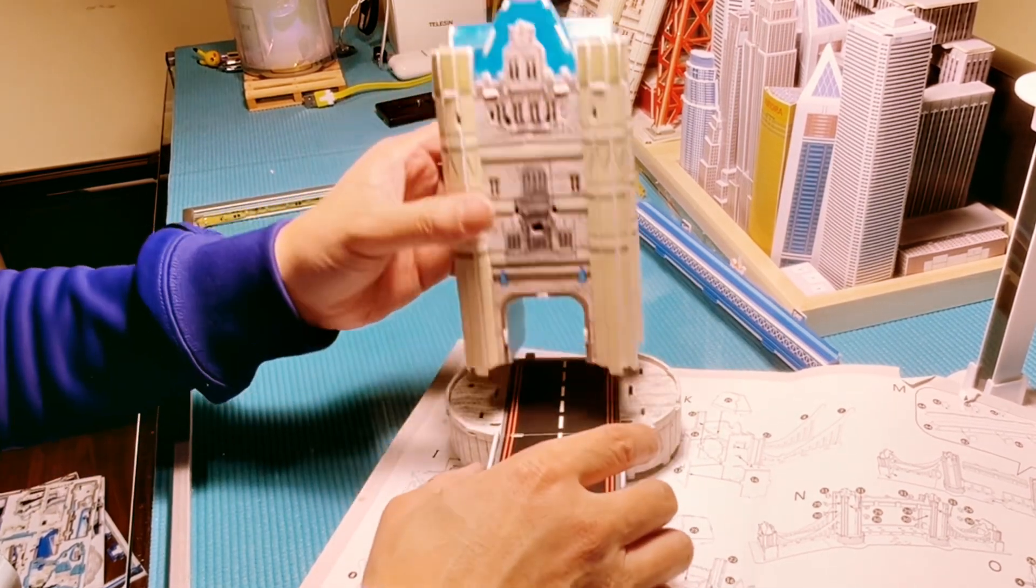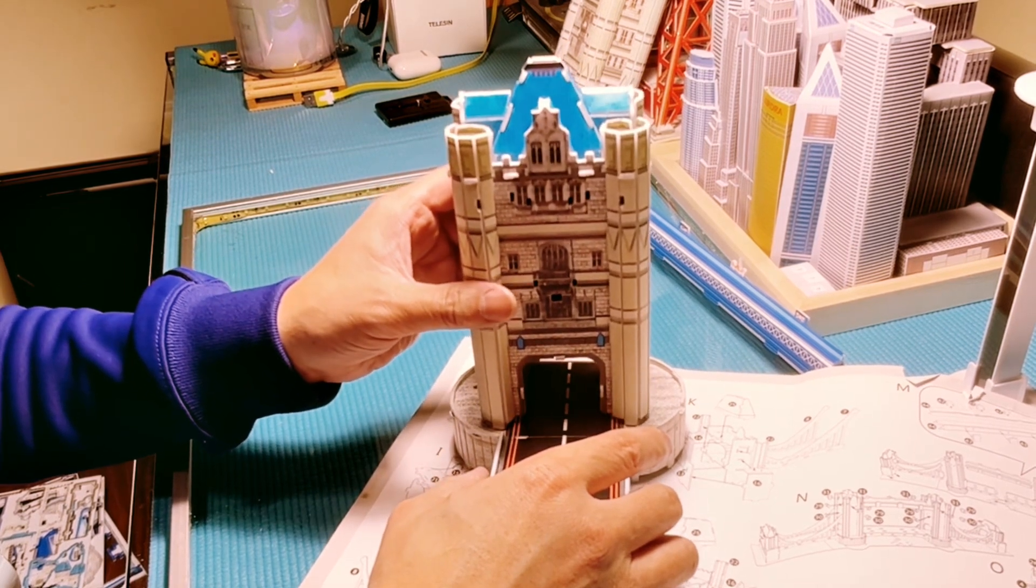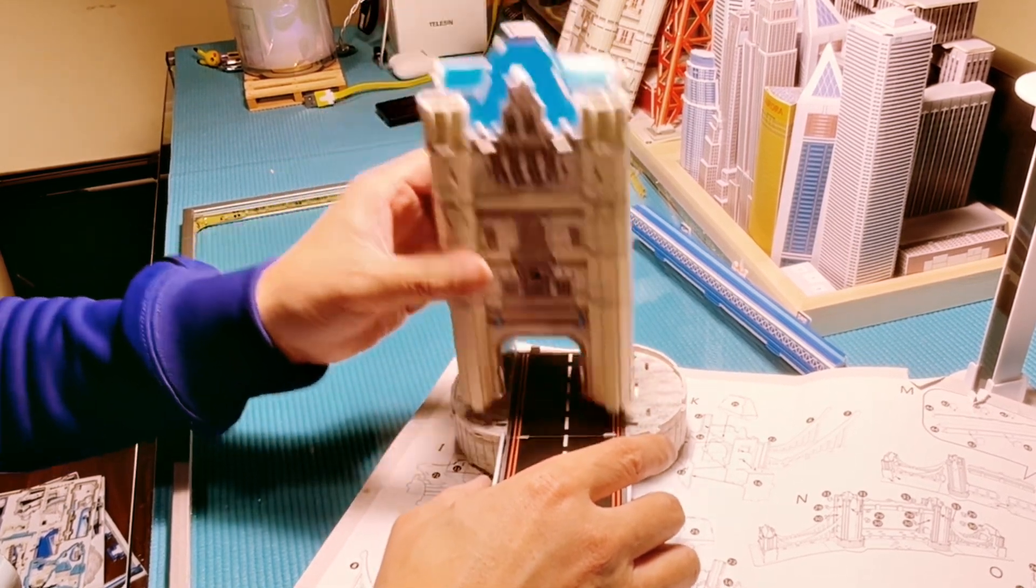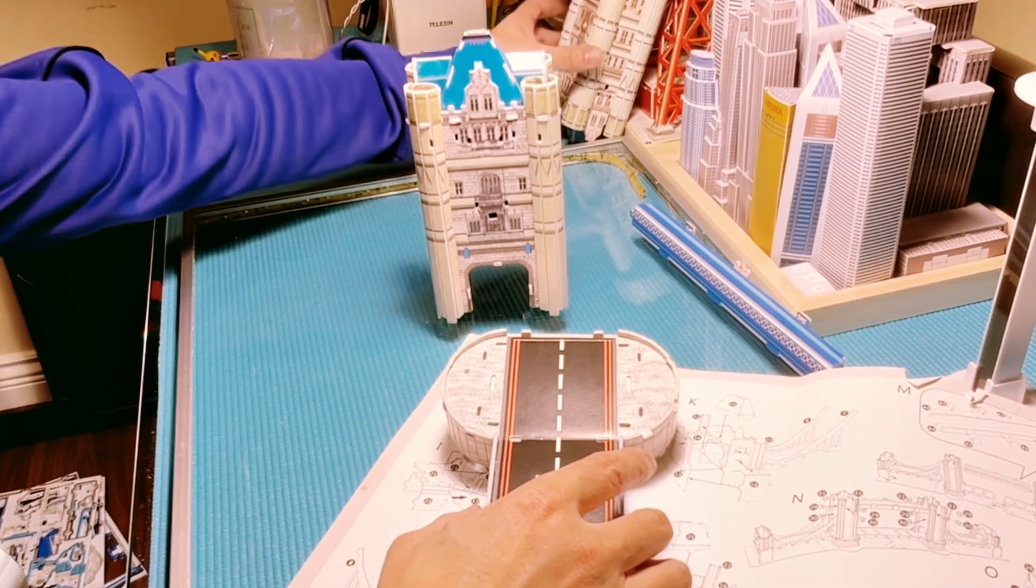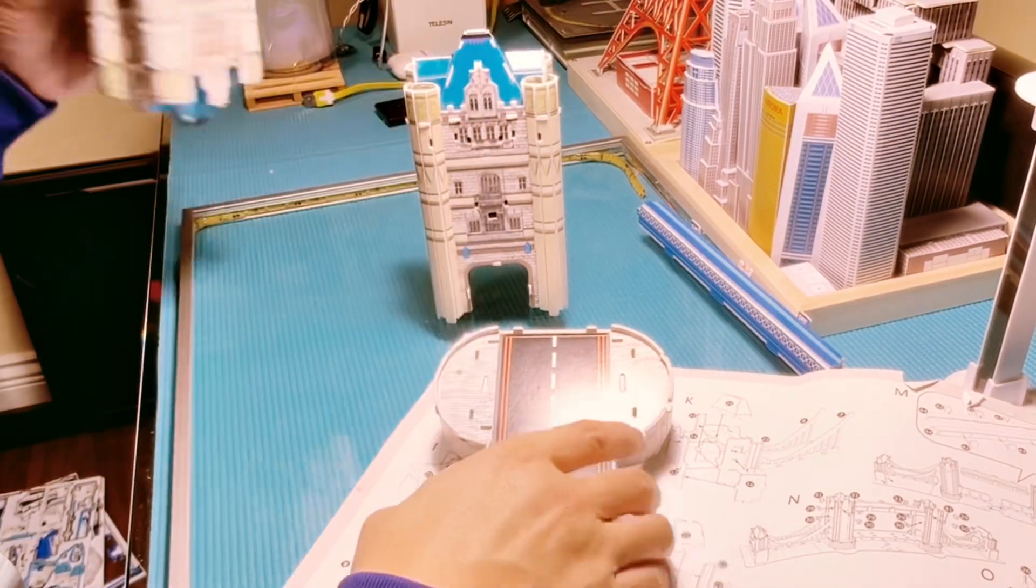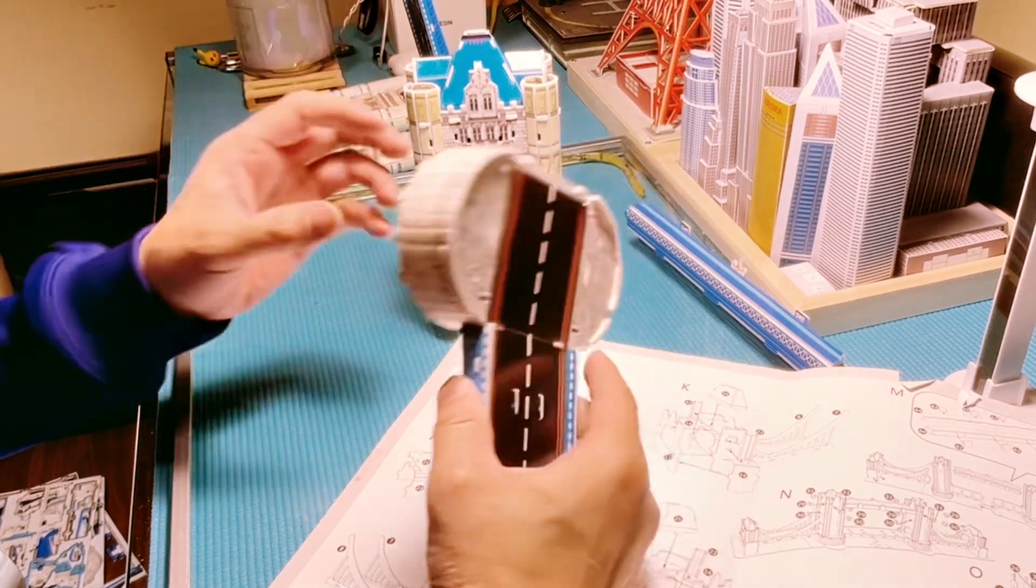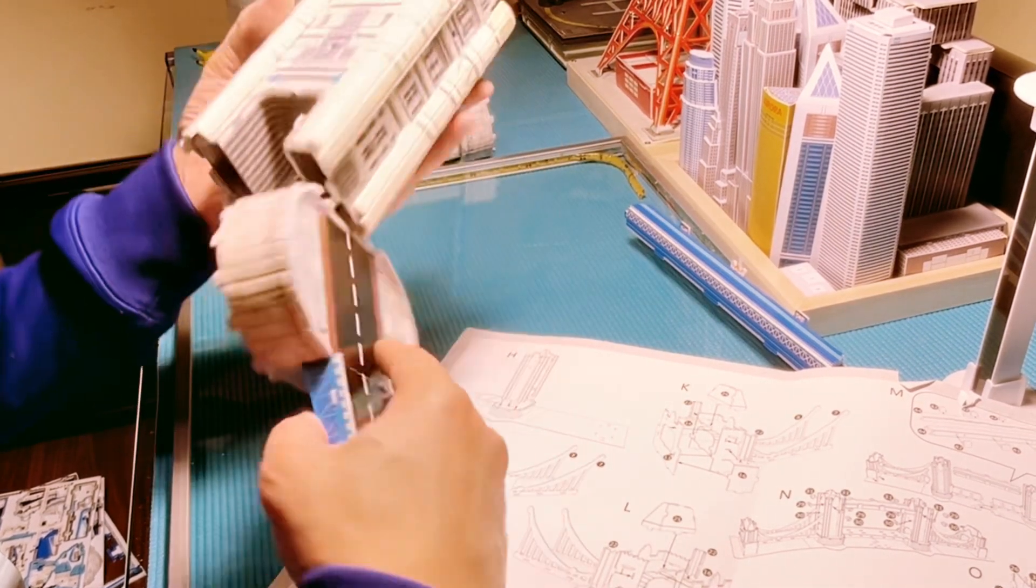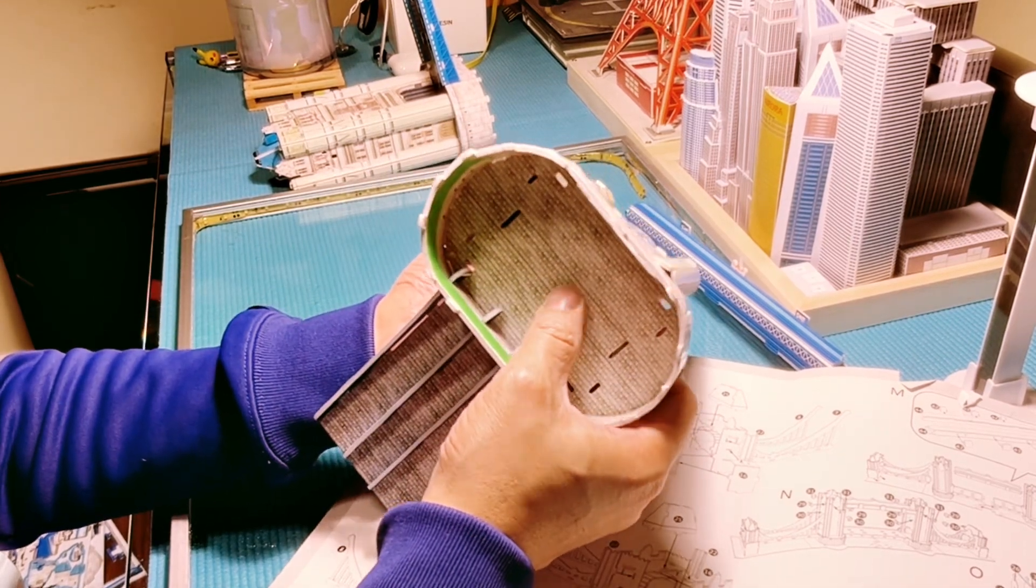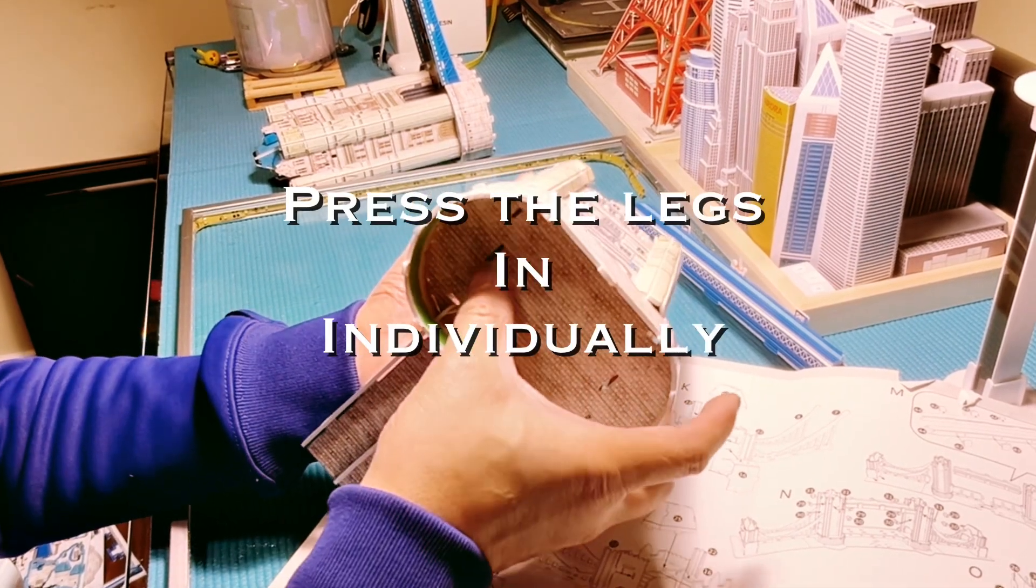You're not gonna be able to align everything perfectly onto here. So it's not gonna work. The only way that this thing is gonna work is to rip out the base of the bridge. And then, so you can use the bottom here as a leverage, so I can press it in individually.